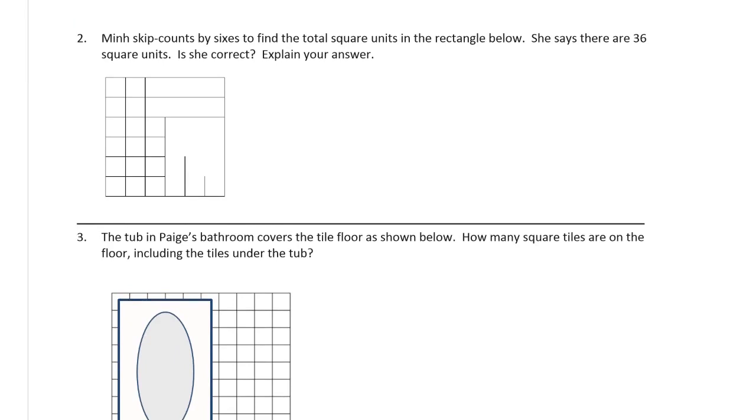Min skip counts by 6's to find the total square units in the rectangle below. She says there are 36 square units. Is she correct? So she skip counts by 6's. Well, what do we have here? We know that we have 1, 2, 3, 4, 5, 6. If this side is 6, then this side has to be 6. So we know that 6 times 6 equals 36. And it says here that she skip counts by 6's. So we could just write down the sequence. 6, 12, 18, 24, 30, 36.